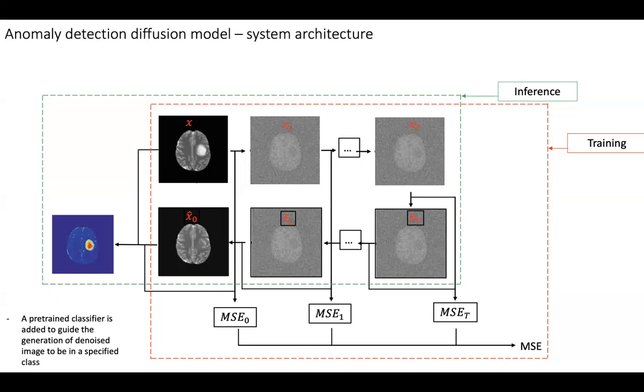This difference map can tell us whether there is an anomaly region or disease in the input image. If the magnitude of this difference map is pretty big, then we expect the original input image is very different from the reconstructed image. Since the reconstructed image is in the healthy class, that means the input image is in the other class, basically the disease class.